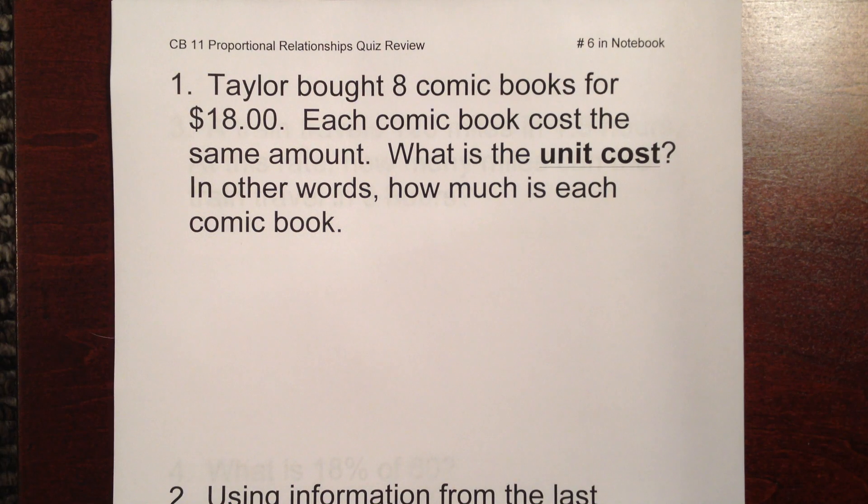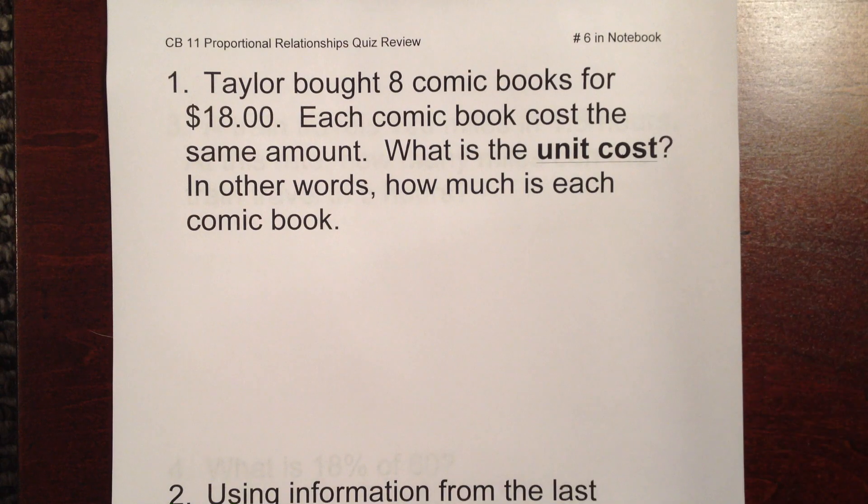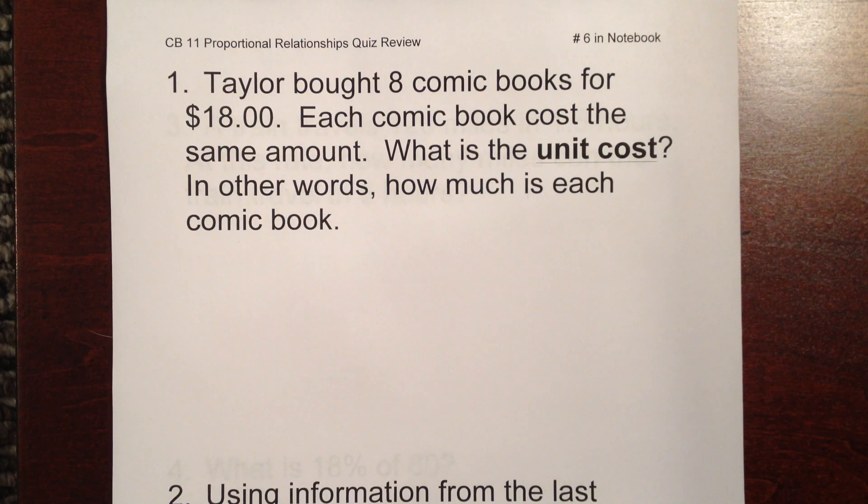This week we're talking about proportional relationships and also something called a unit cost, which basically means how much each unit in a package, for example, might cost. So if you've got a package of candy bars, for example, that you bought for a dollar and there were four in there, the unit price would be 25 cents. You would divide the dollar by four and get a quarter or 25 cents each.